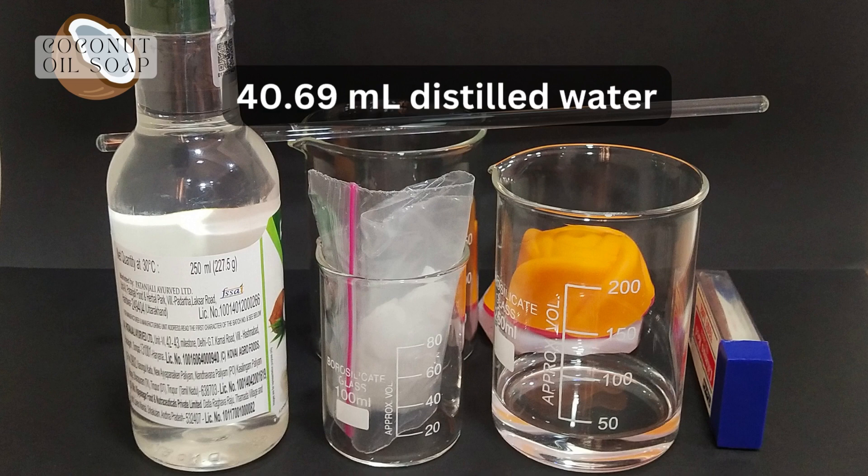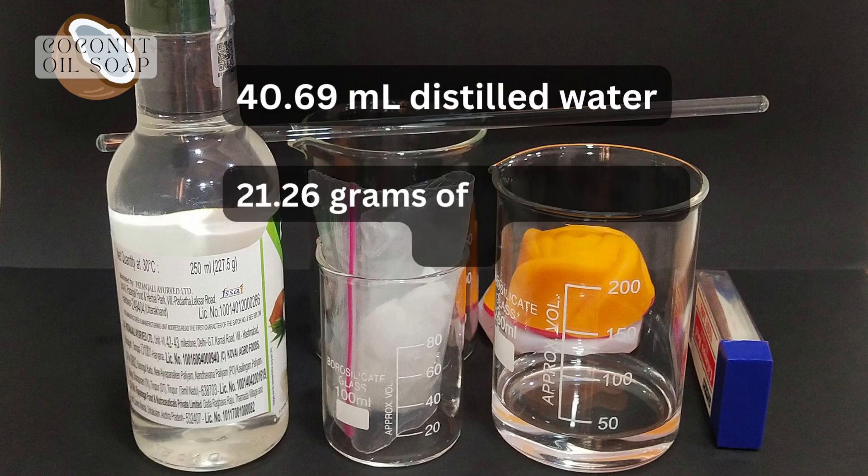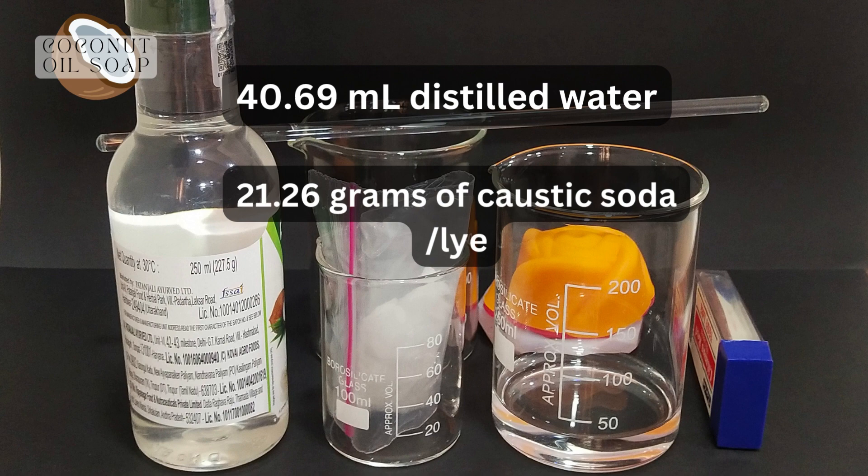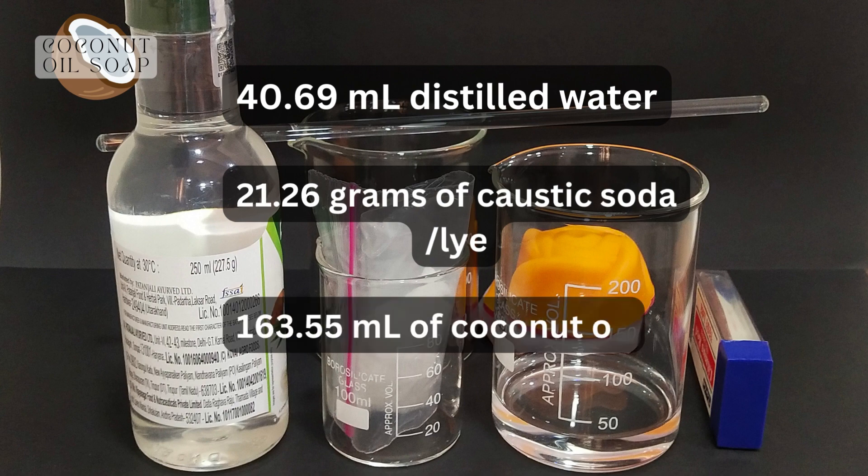Now let's start with the things we require before starting this process. So I am going to use 40.69 ml of distilled water, 21.26 grams of caustic soda or lye, and 163.55 ml of coconut oil.